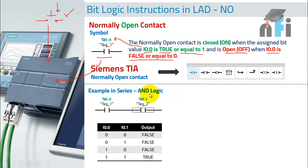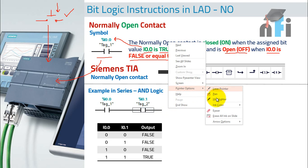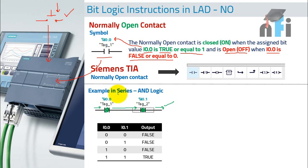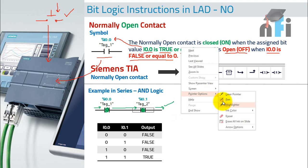Now let's see some examples. You can connect contacts in series — two contacts tagged with addresses I0.0 and I0.1. If you connect them in series, the output will be false if both contacts are 0, meaning both are false. The output is also false if only one contact is true. This is an AND gate — in an AND gate, if both inputs are true, only then will you have a signal passing through to the output. This is the series example made by two NO contacts in series.